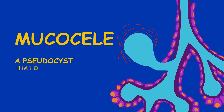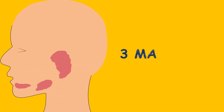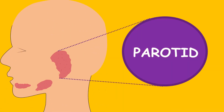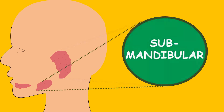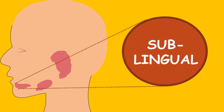A mucocele is a pseudo-cyst that develops from the rupture of a minor salivary gland duct. Humans have a set of three major salivary glands: the parotid, submandibular, and sublingual salivary glands.